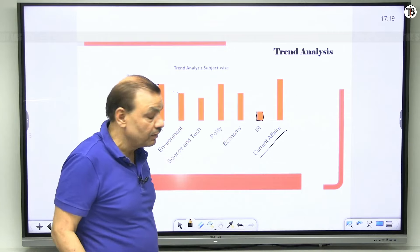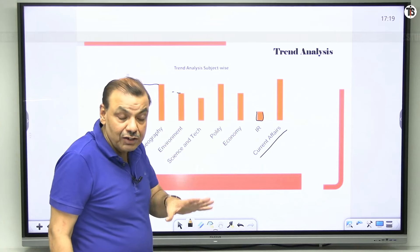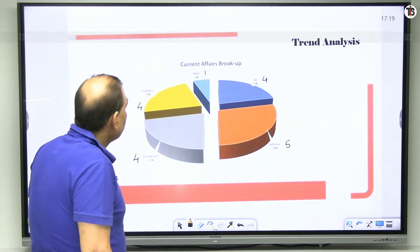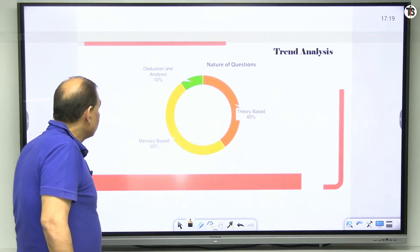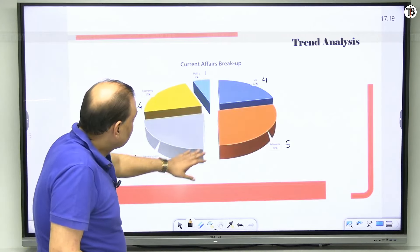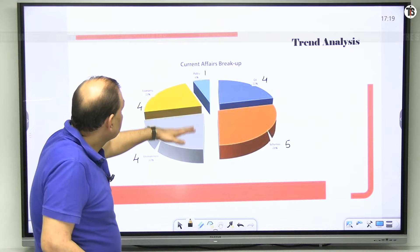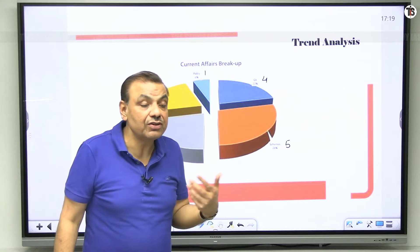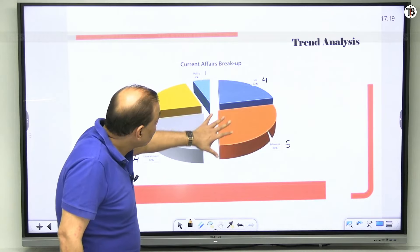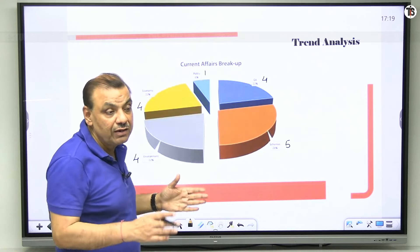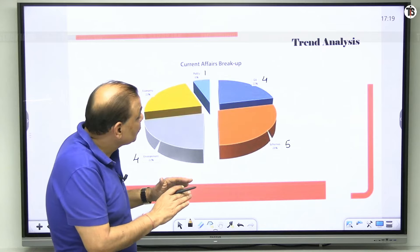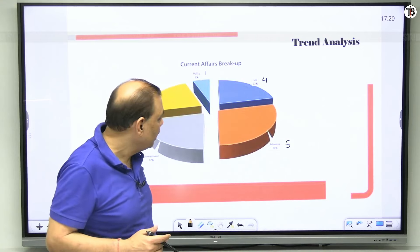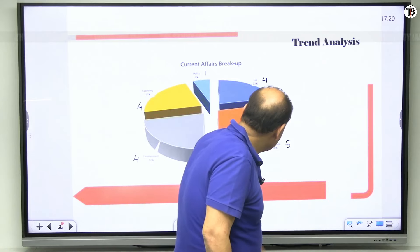That is the welcome sign and the most important thing is that the question is reached in the end. Now I will tell you a second trend, now break up. Now in current affairs break up, there are 16 questions I have just counted, we have counted total 16 questions from the current affairs. But even among the part of current affairs, you will find the internal break up, how many questions from which side. This is a scheme based question, say government scheme 28 percent questions.